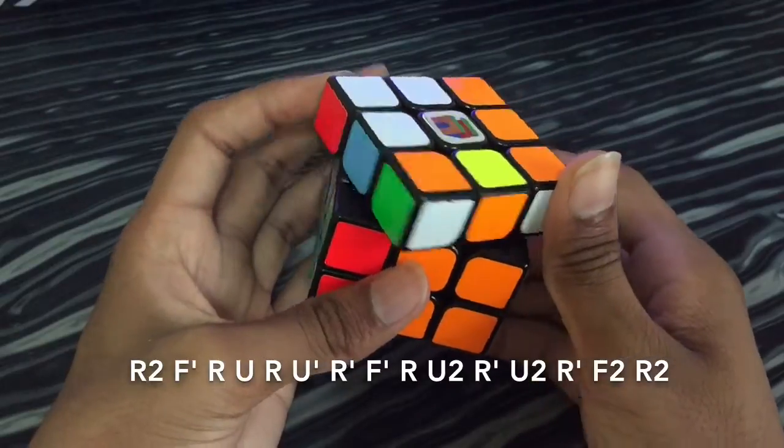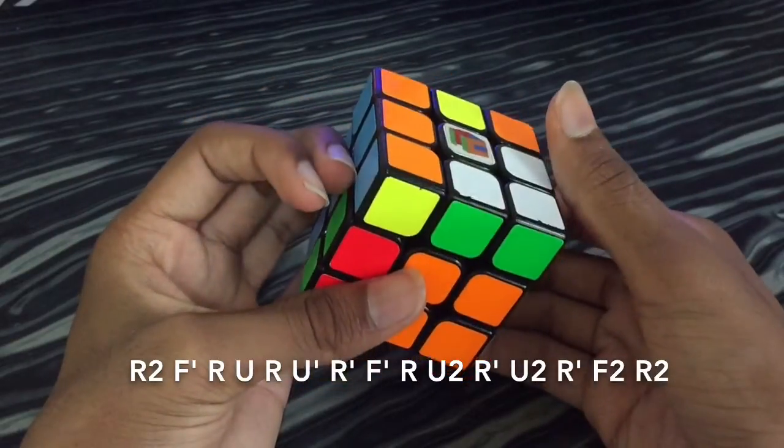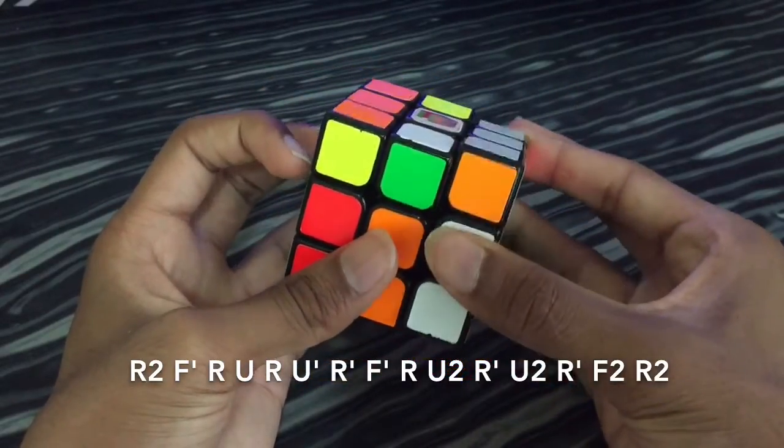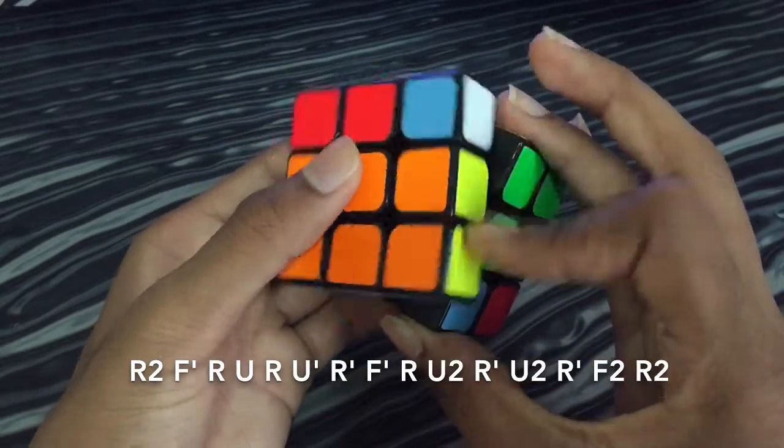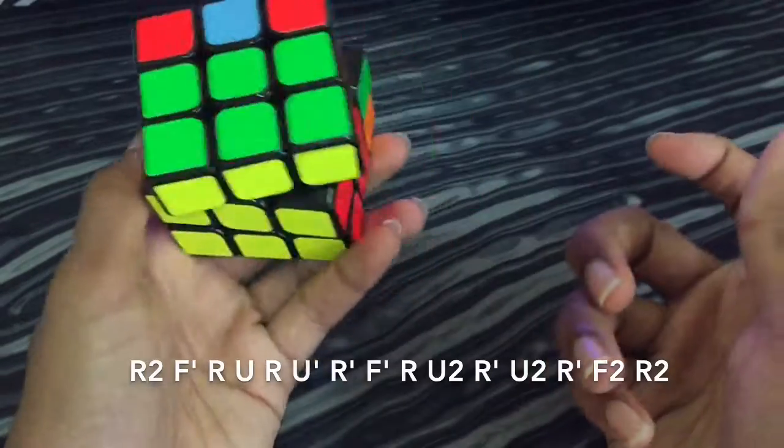Then take this pair out, double flick with your left hand and bring this down, double flick with your right hand, and then pair it up. That's it.